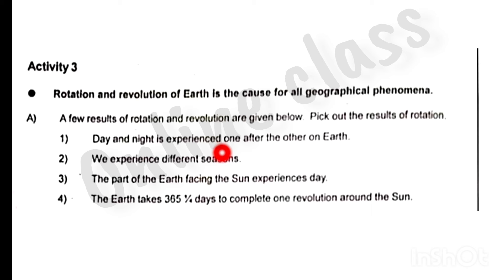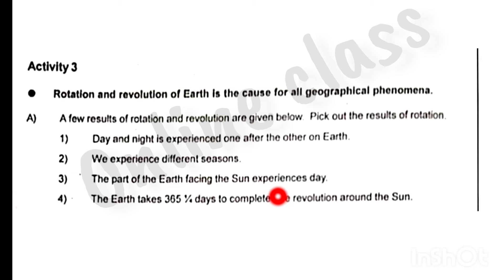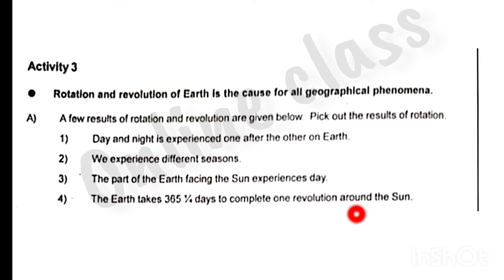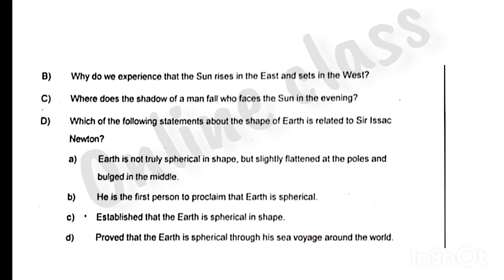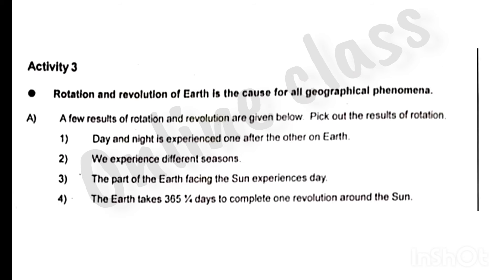Day and night is experienced one after the other on earth. We experience different seasons. The part of the earth facing the sun experiences day. We experience the sun every day. The earth takes 365 and 1/4 days to complete one revolution around the sun.